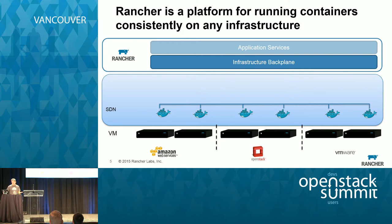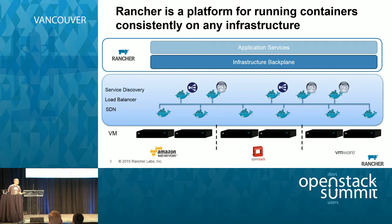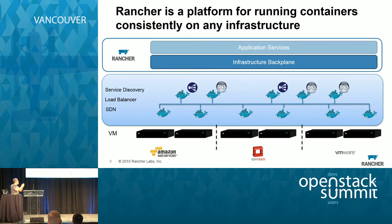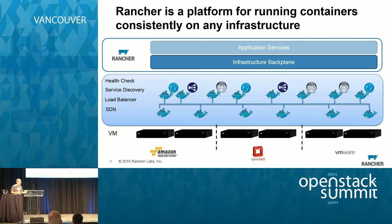Then Rancher lays on our own implementation of SDN, a load balancer implemented using containers, and our service discovery mechanism. Service discovery — for those coming from a cloud background — is basically the equivalent of a load balancer, but for internal services. Through programming DNS with round-robin, you can set up service discovery for all your internal microservices. We also do health checking as an integral part of the Rancher platform for all your containers and services.